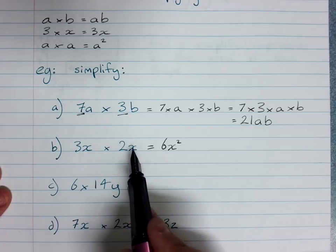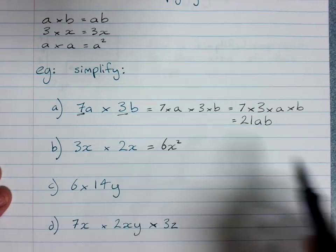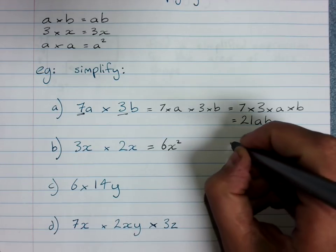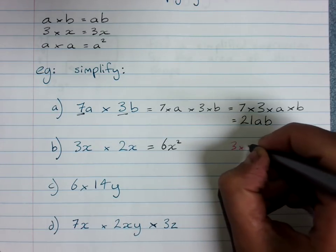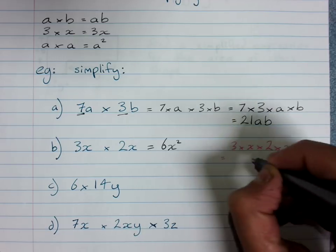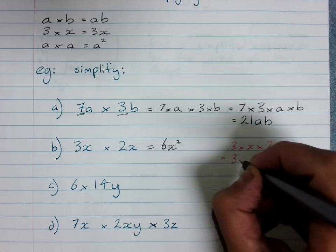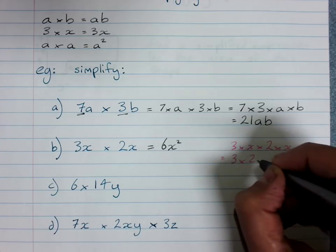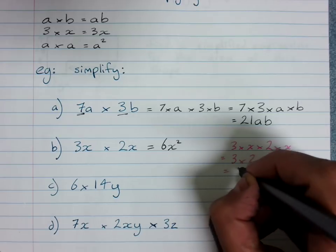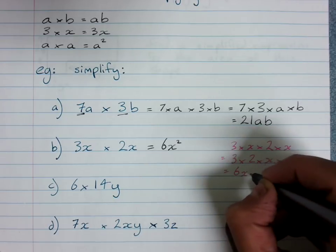If we'd wanted to do this a long way around, which we don't have to do, we could have done this as 3 times x times 2 times x. Rearranged so it's 3 times 2, the coefficients out the front, times x times x, and that's 6x squared.